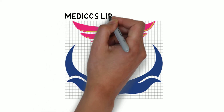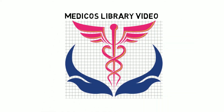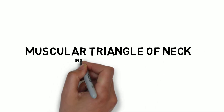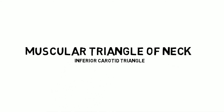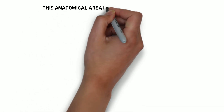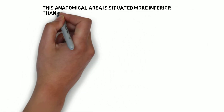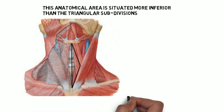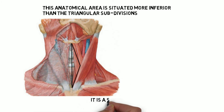Hello guys, this is a MediCoast Library video for you. The topic is the Muscular Triangle of the Neck. It is also called the Inferior Carotid Triangle. It is a division of the anterior triangle of the neck, and its anatomical area is situated more inferior than the other triangular subdivisions.